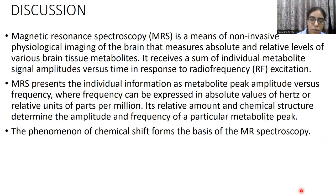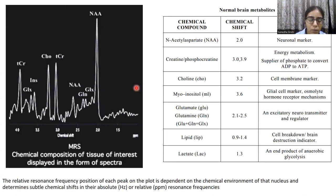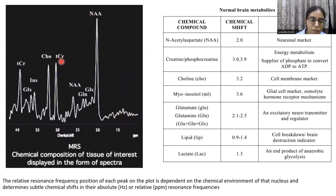The relative amount and chemical structure determine the amplitude and frequency of a particular metabolite peak, and this phenomenon of chemical shift forms the basis of the MR spectrum. The MR spectrum graph is usually read from right to left. The first peak seen is the lipid peak, followed by the lactate peak, then the NAA peak, followed by the creatinine peak, then the choline peak, and finally the myoinositol peak.